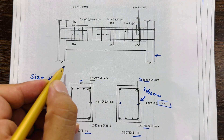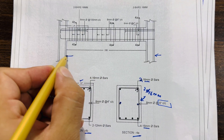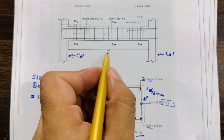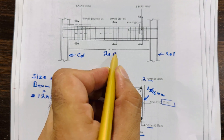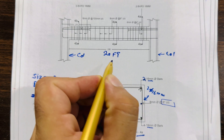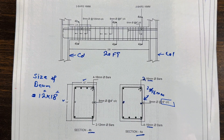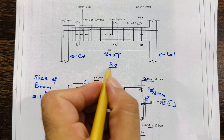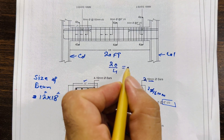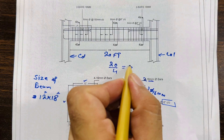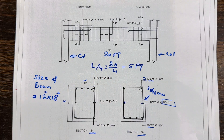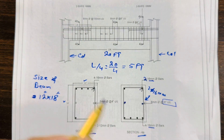This is one column and this is the other column. The span between the two columns is 20 feet. At the distance of L/4, that is 20 divided by 4, you get a value of 5 feet. This distance is called L/4.